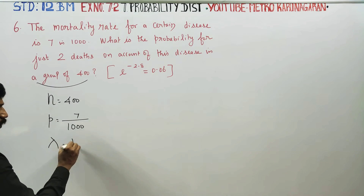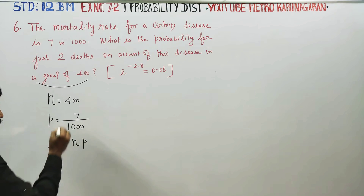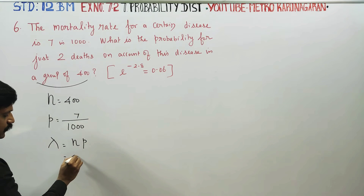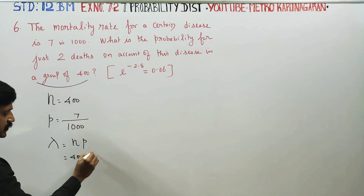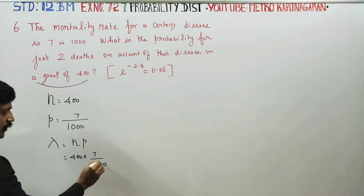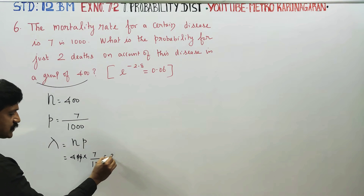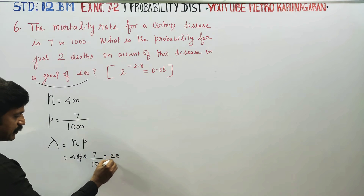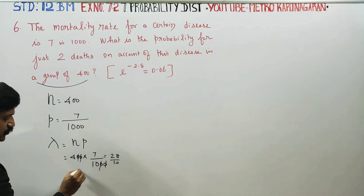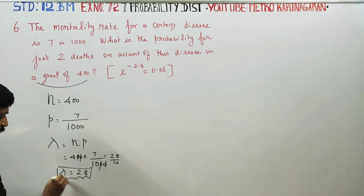The lambda formula is n multiplied by p. Here, n is 400 and p is 7 by 1000. The 200s cancel, giving 7 times 4 equals 28 by 10, which is 2.8. So lambda equals 2.8.